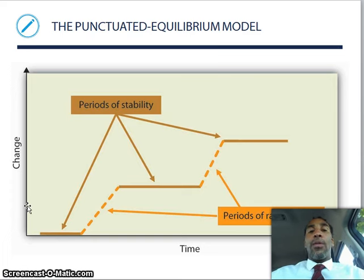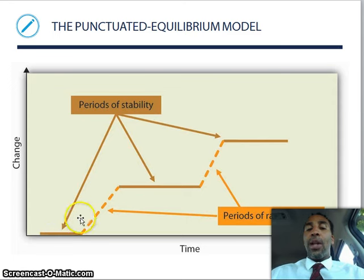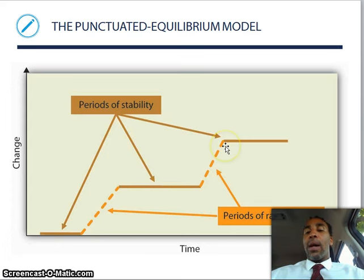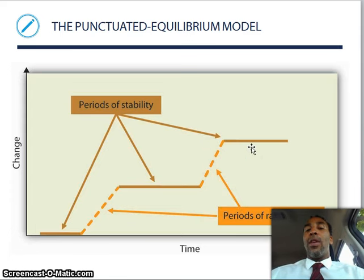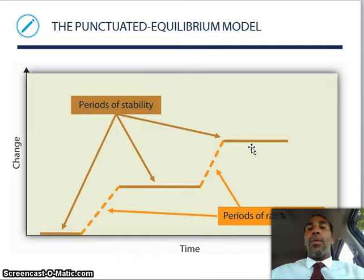The punctuated equilibrium model shows periods of stability followed by periods of rapid change. The company gets crazy — you make more money, more sales, more responsibilities — then returns to a period of stability, and then bam, rapid change again. Some groups move very quickly at certain times and slowly at others. So the punctuated equilibrium model is definitely a good one.